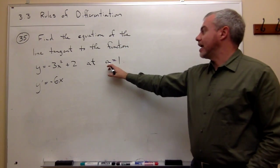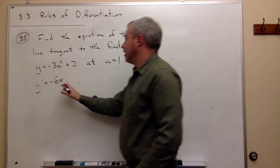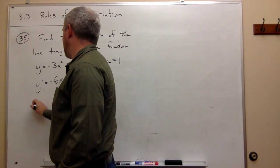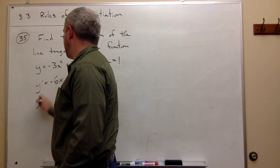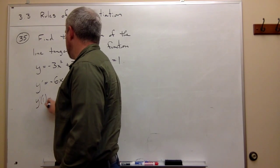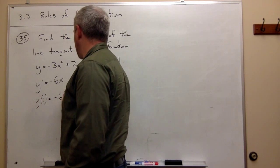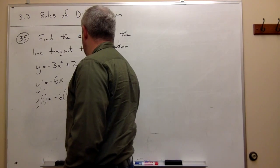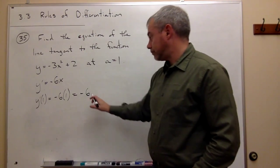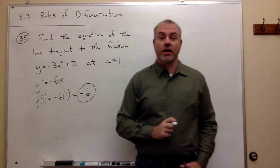If I'm interested when x equals 1, then I plug in 1, and I get that y prime at 1 equals negative 6 times 1, which is just negative 6. So negative 6 is my slope.